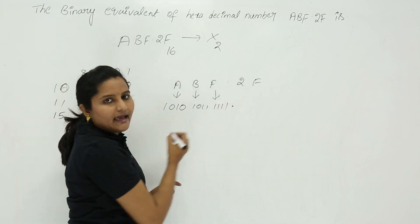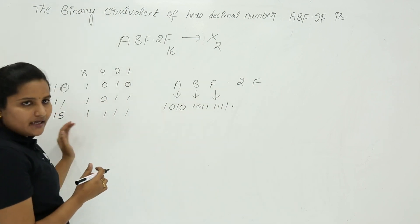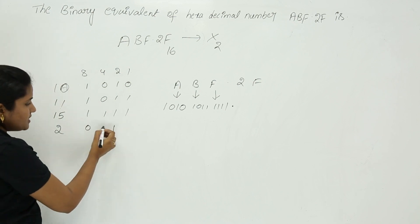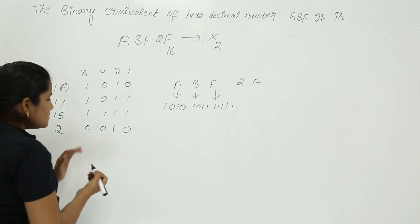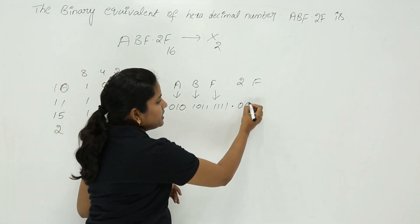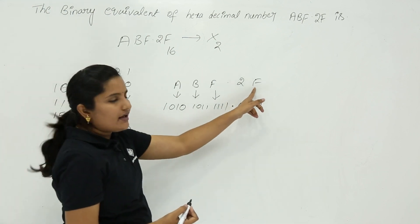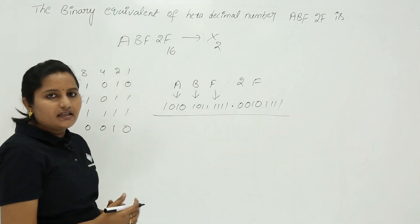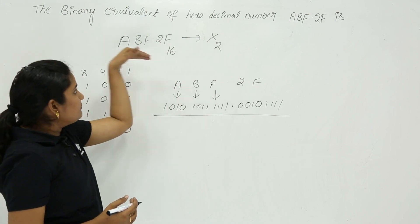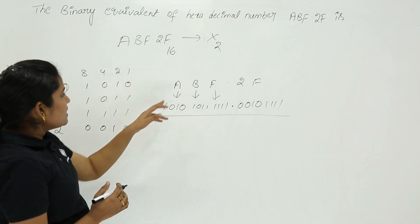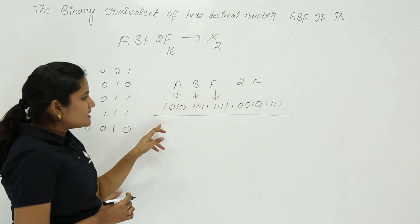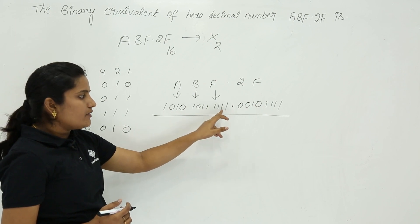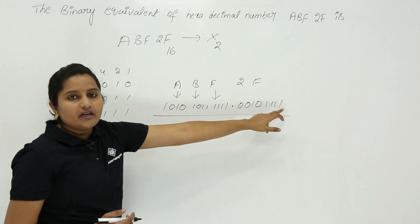Next, keep the decimal point as it is. For 2, the only place you need is the 2-position, so the binary for 2 is 0010. For the final F, again take 1111. So the complete resultant binary number for ABF.2F is: 1010 1011 1111 . 0010 1111.